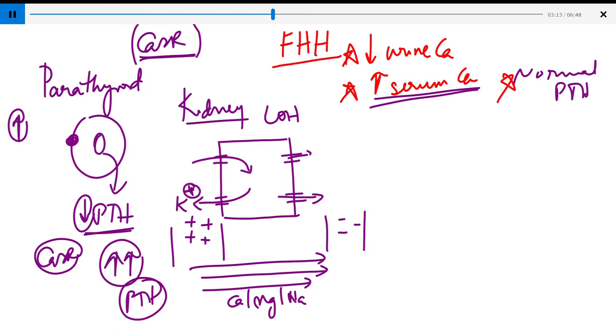CASR, if there is hypercalcemia, blocks the potassium exit so that there's no electropositivity, and thus it doesn't drive the reabsorption. So all of this gets excreted.